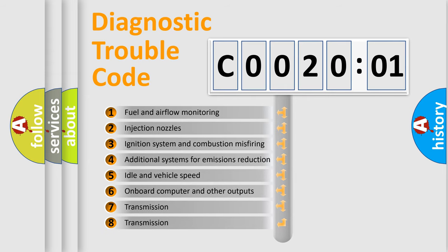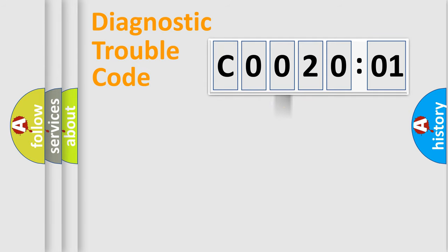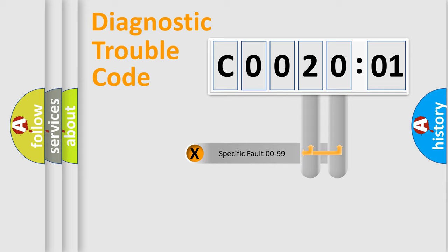The third character specifies a subset of errors. The distribution shown is valid only for the standardized DTC code. Only the last two characters define the specific fault of the group.